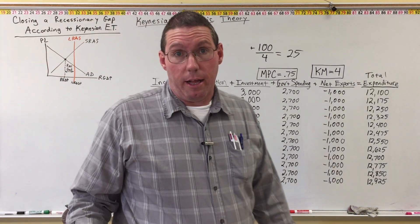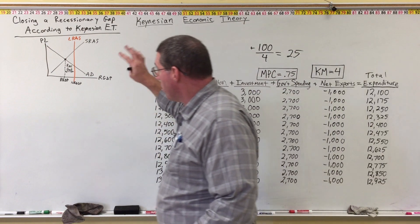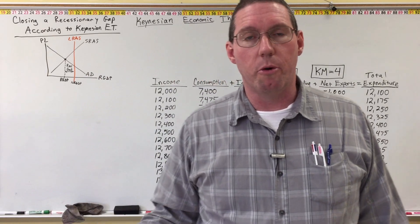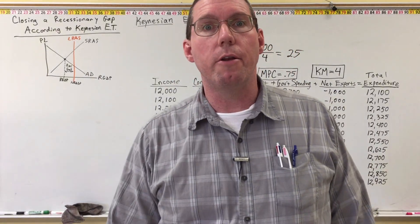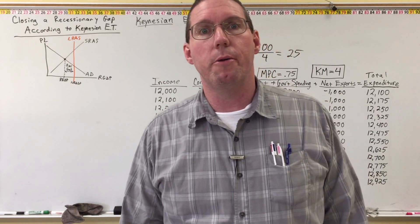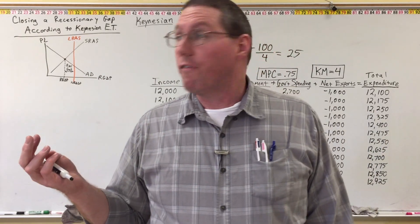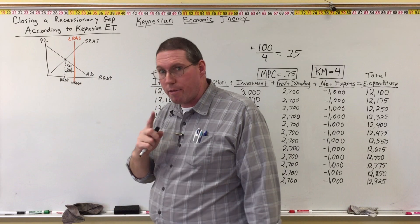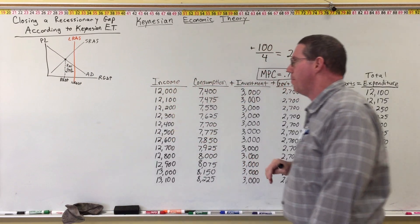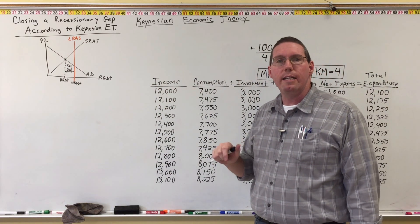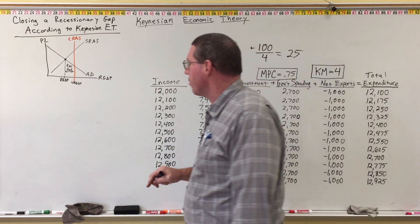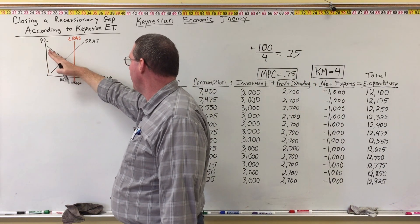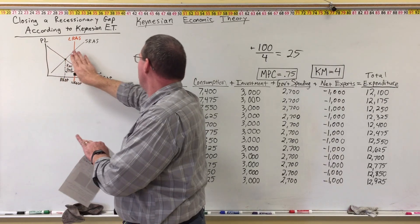If we were in classical economic theory, everybody would say this is terrible — we're in a recessionary gap, what do we do? Classical economists would say: don't do anything. Just wait for the gap to close, wait for the short-run aggregate supply curve to shift to the right, and everything will be fine. That's classical economic theory. But Keynes said that's not going to happen. This gap is not going to close by itself. We need to take action — not by moving the aggregate supply curve, we need to move the aggregate demand curve.